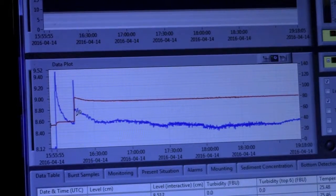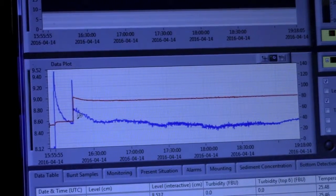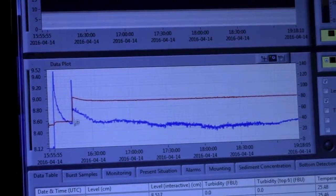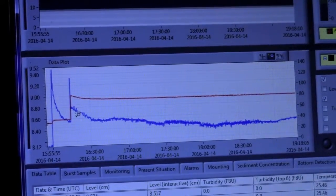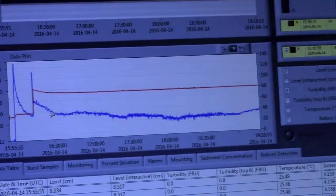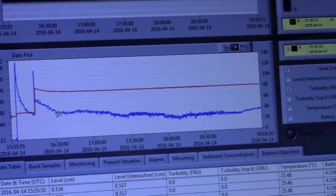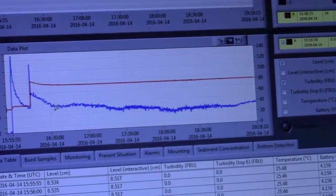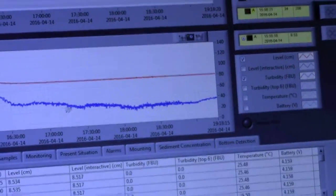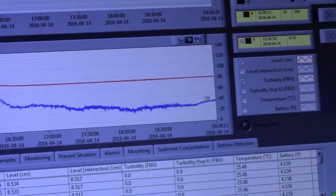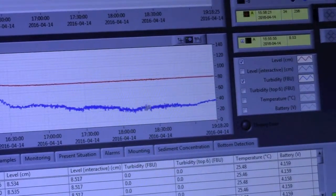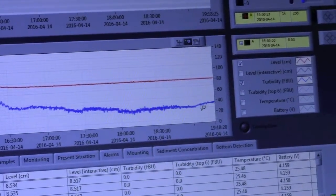But as you see it didn't fall back to the same level, which means that there was some resuspension of the dark humus, and then that sedimented on top of the white sand as we saw the black cover of the light sand. And it's been gradually falling down, going a little bit up and a little bit down. Here it's around 30 FBU.